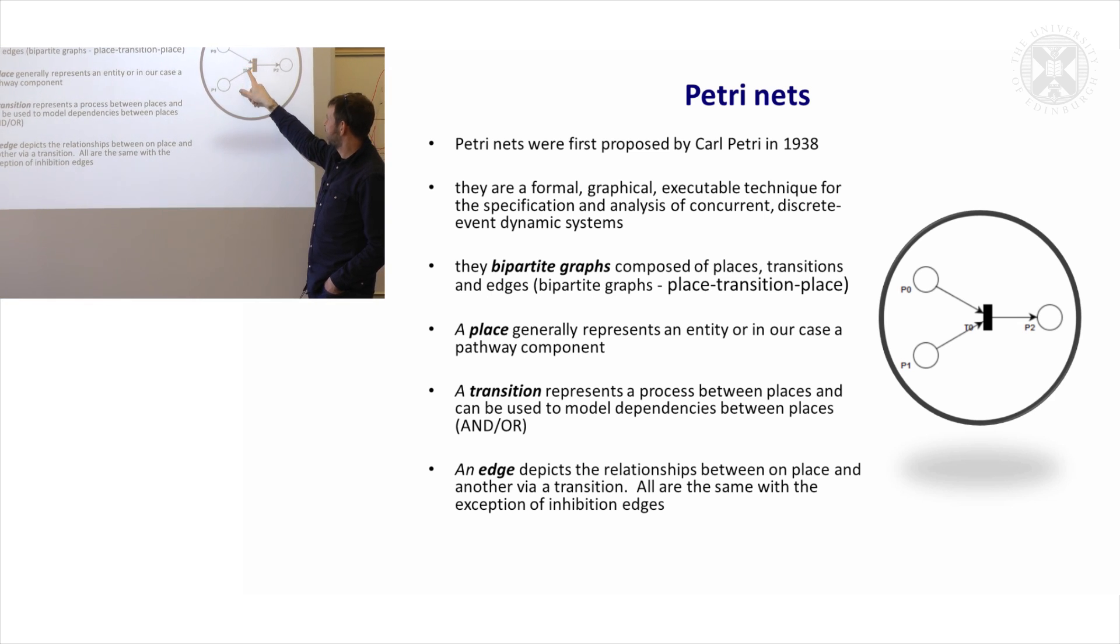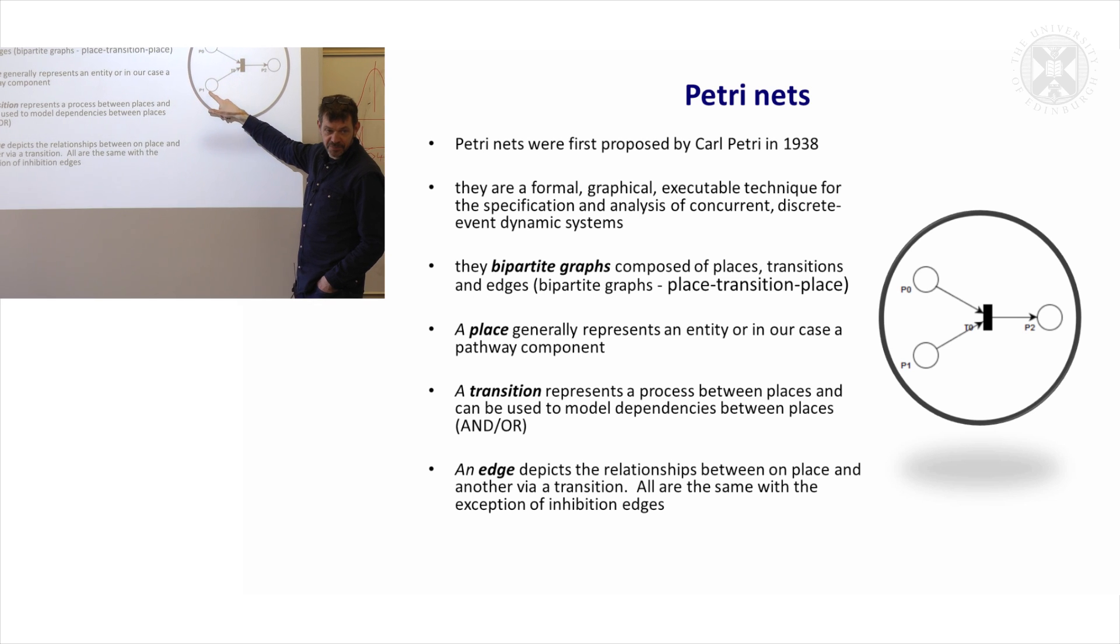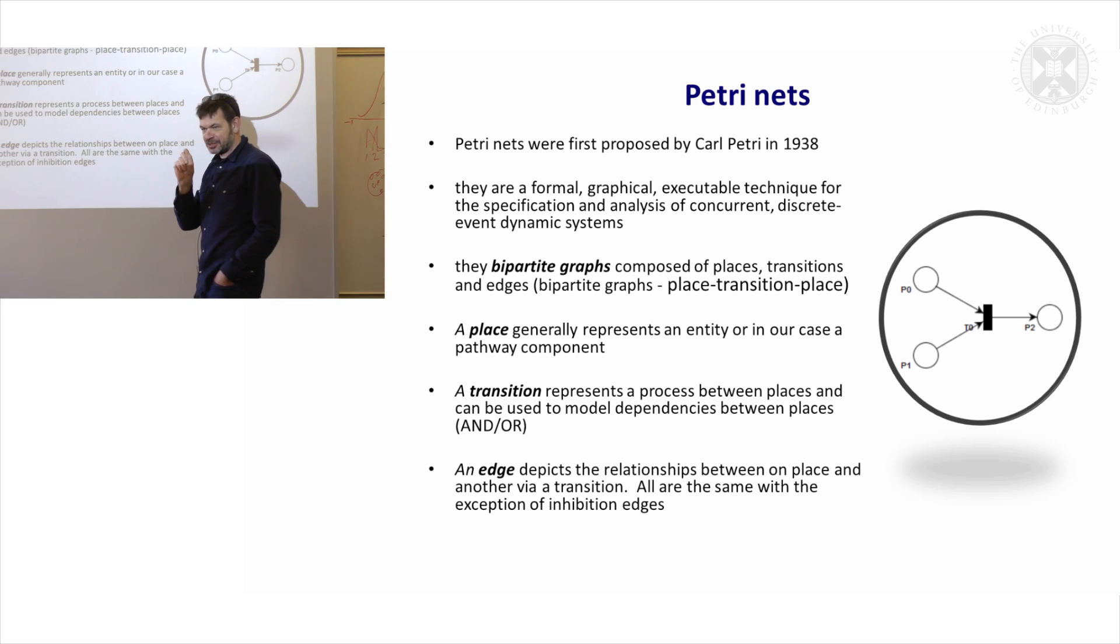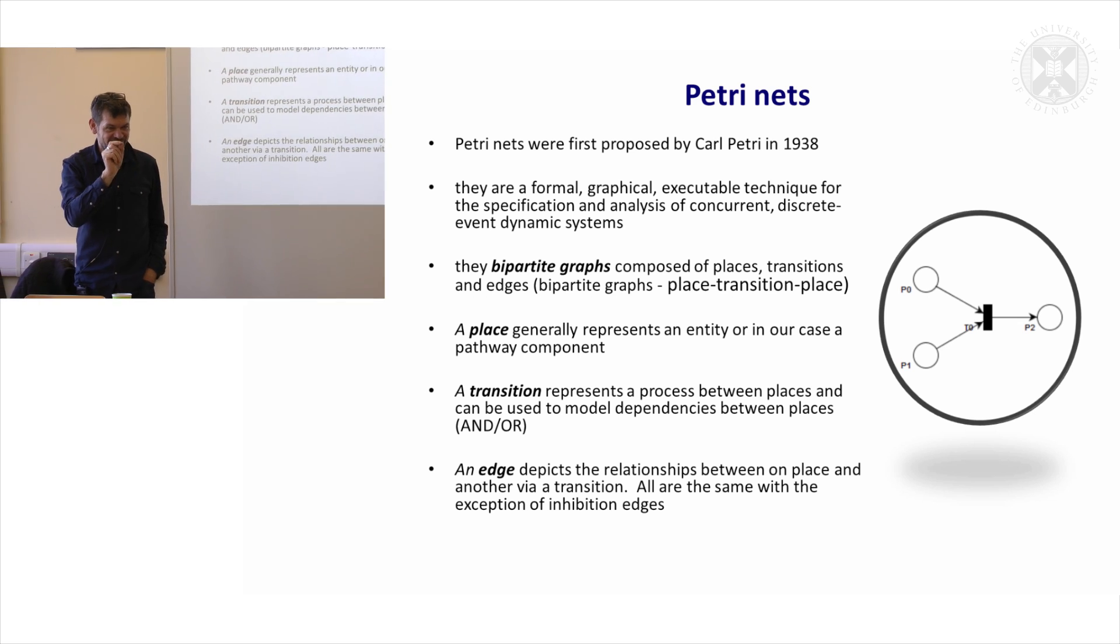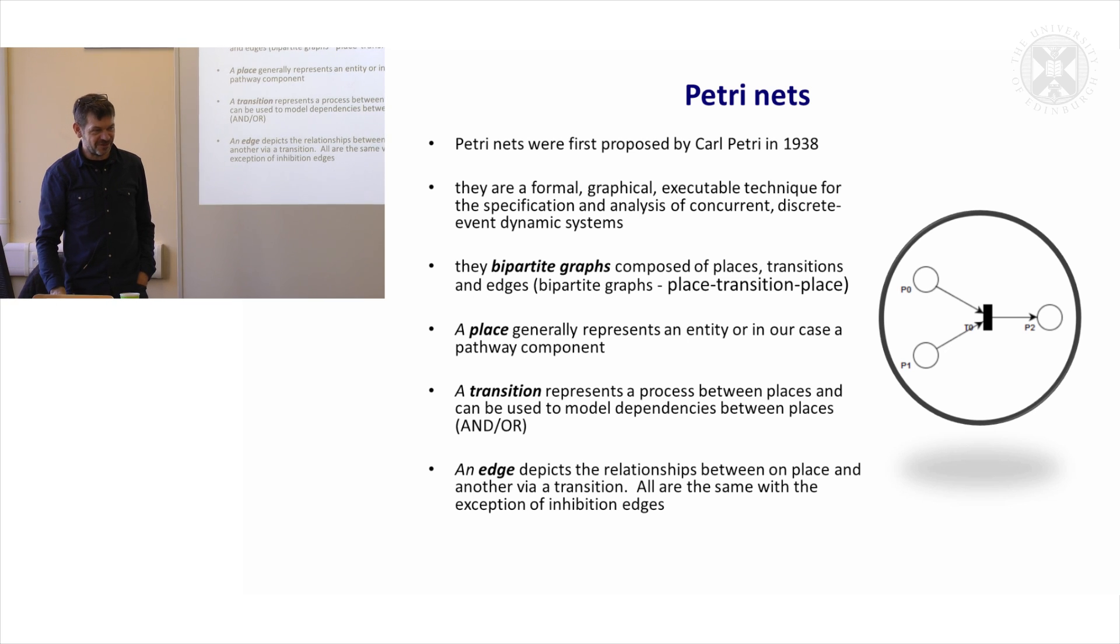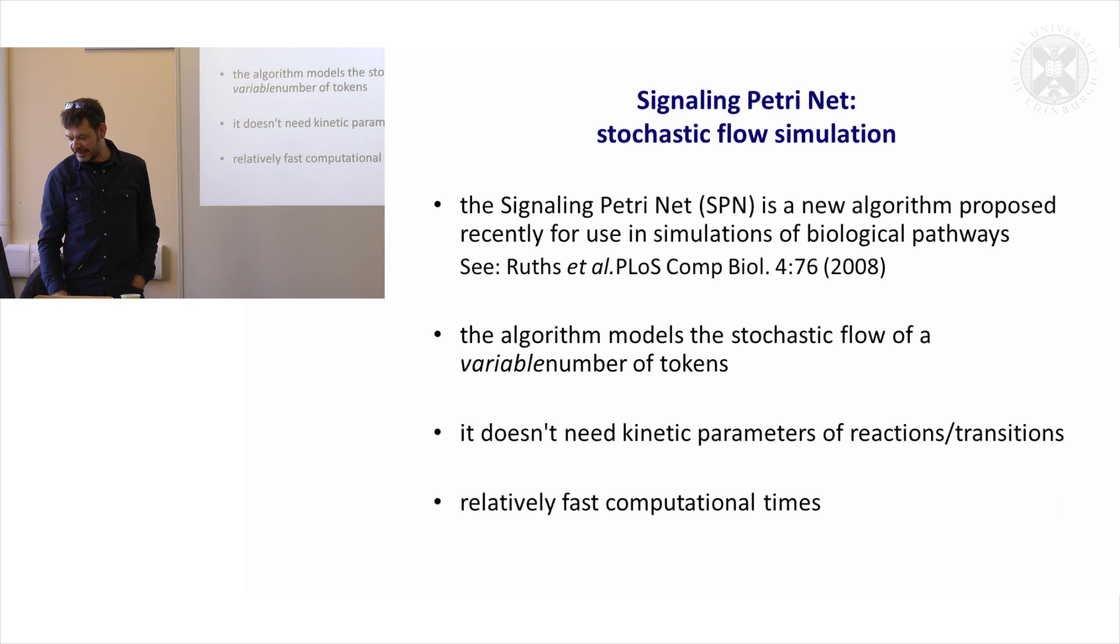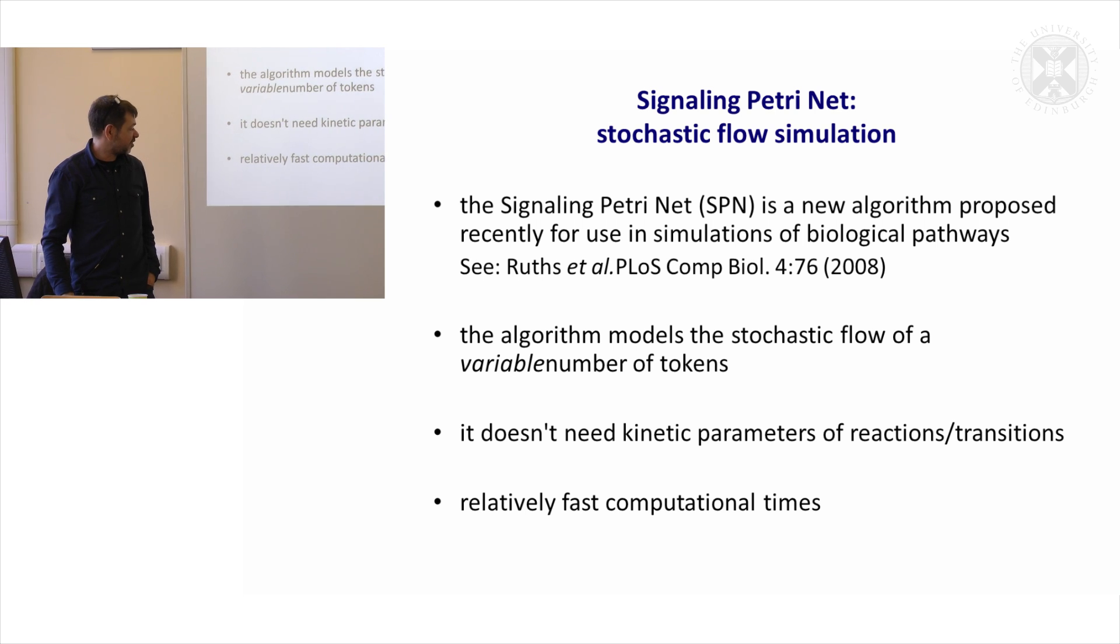So when this guy here fires, it's going to move tokens from one place downstream from that place. So it's going to go from a parent to a child. It's a lot easier to actually see than it is to imagine. The nice thing about this is it doesn't need kinetic parameters and it's a very fast computation.